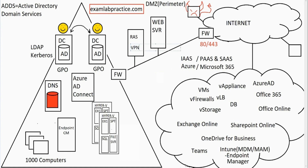From there, you can configure VPN. RAS servers can be a router, they can be VPN, they can support NAT — network address translation. You can also put the Direct Access feature on there, though they're kind of getting away from that. And RAS supports a number of protocols that make all this work.